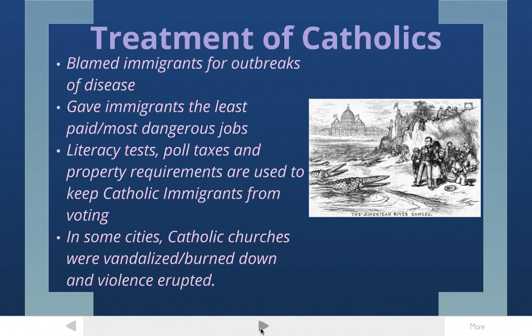The treatment of Catholics was pretty bad. Protestants did not open up to Catholics or welcome them when they moved to the United States. Protestants and native-born citizens would blame these new immigrant groups for outbreaks of disease. They gave immigrants the least paid and most dangerous jobs — that's why when we studied the Transcontinental Railroad, you saw Irish and Chinese immigrants working on the dangerous railroad building. Catholic immigrants were also excluded from the polls and not allowed to vote through laws. When a law was impossible to enforce, things like literacy tests, poll taxes, and property requirements — things immigrants typically didn't have or couldn't pass due to language barriers — kept Catholic immigrants from voting.